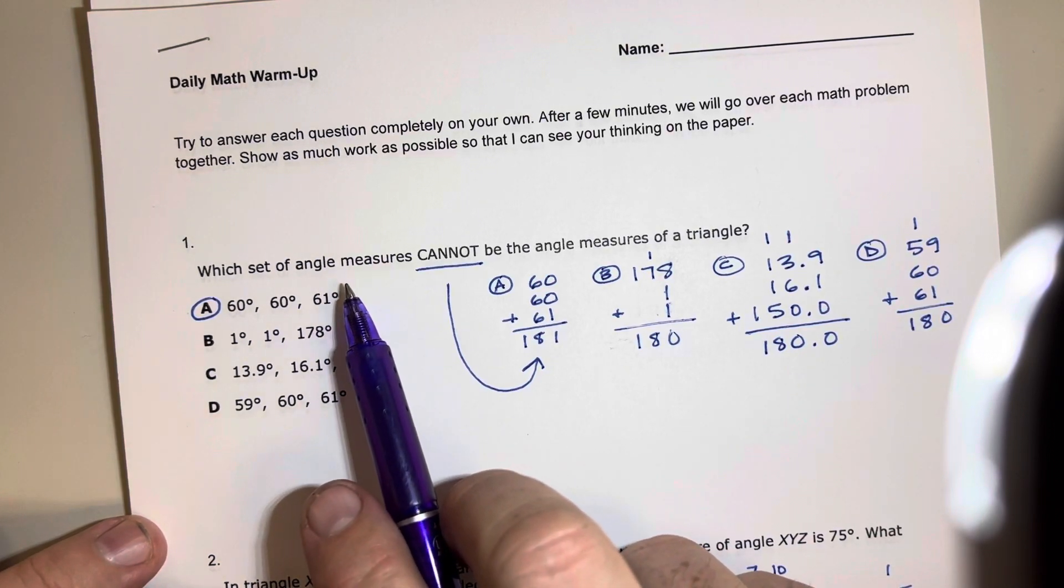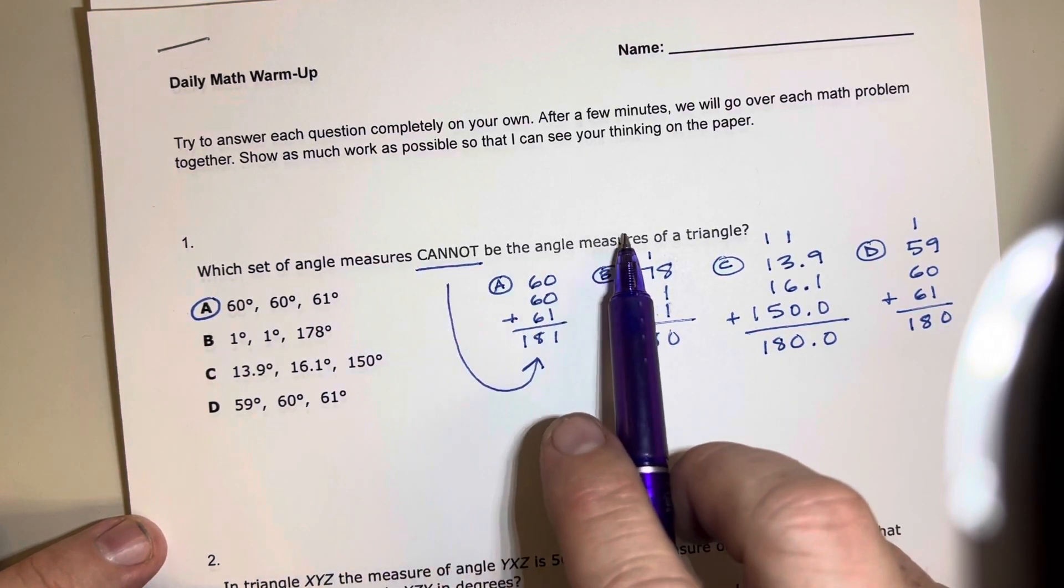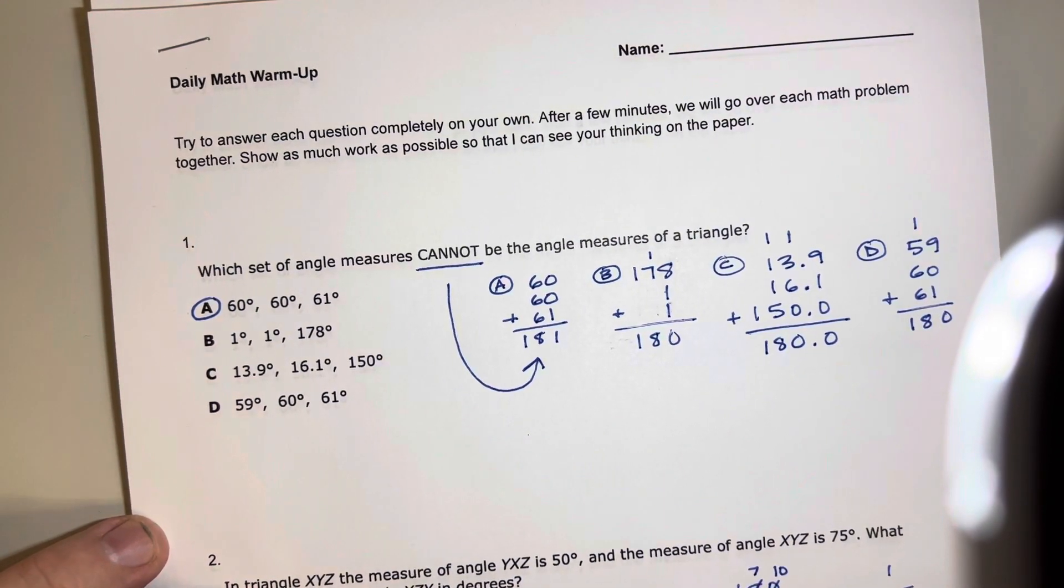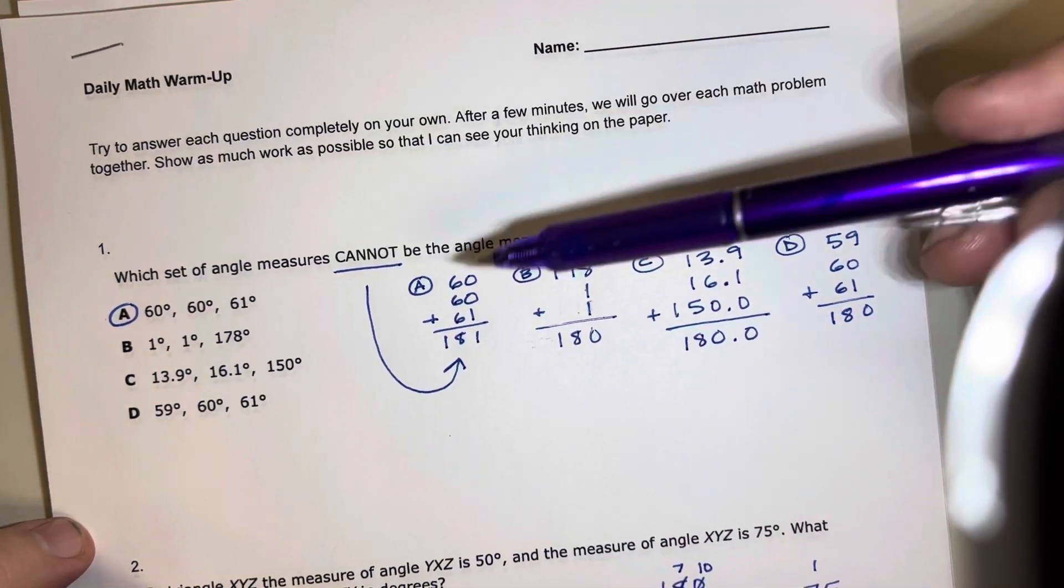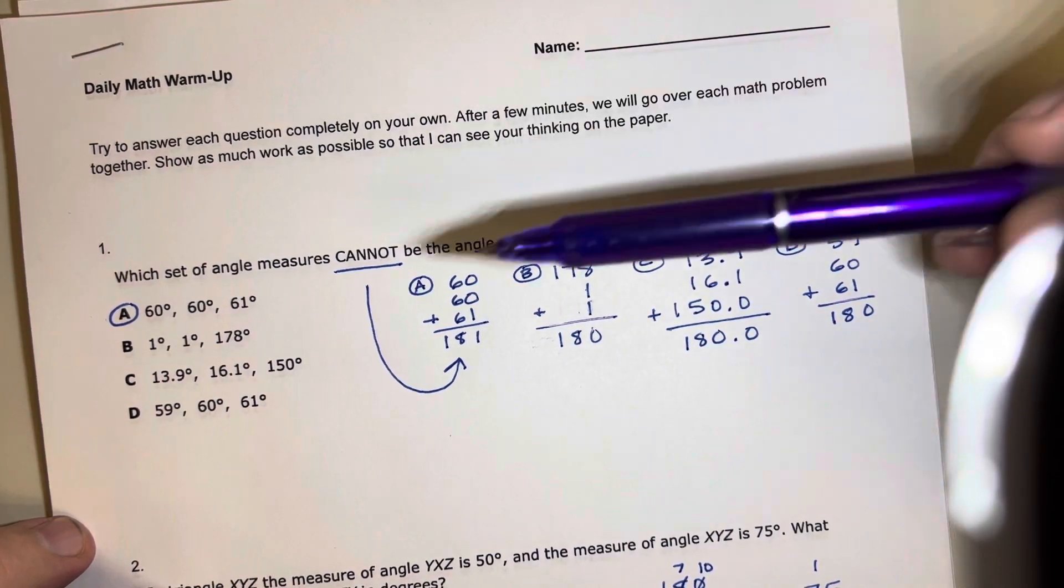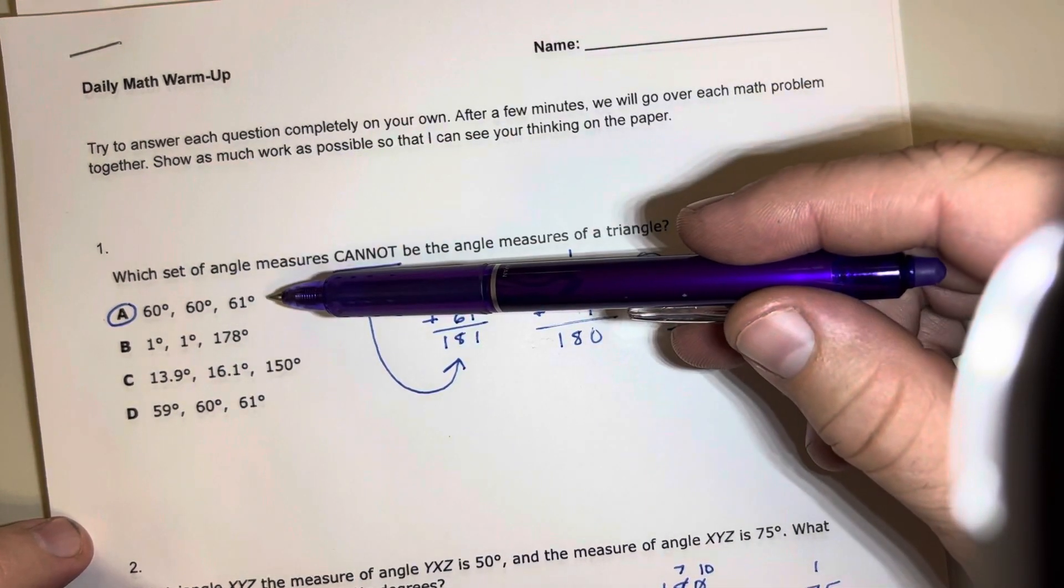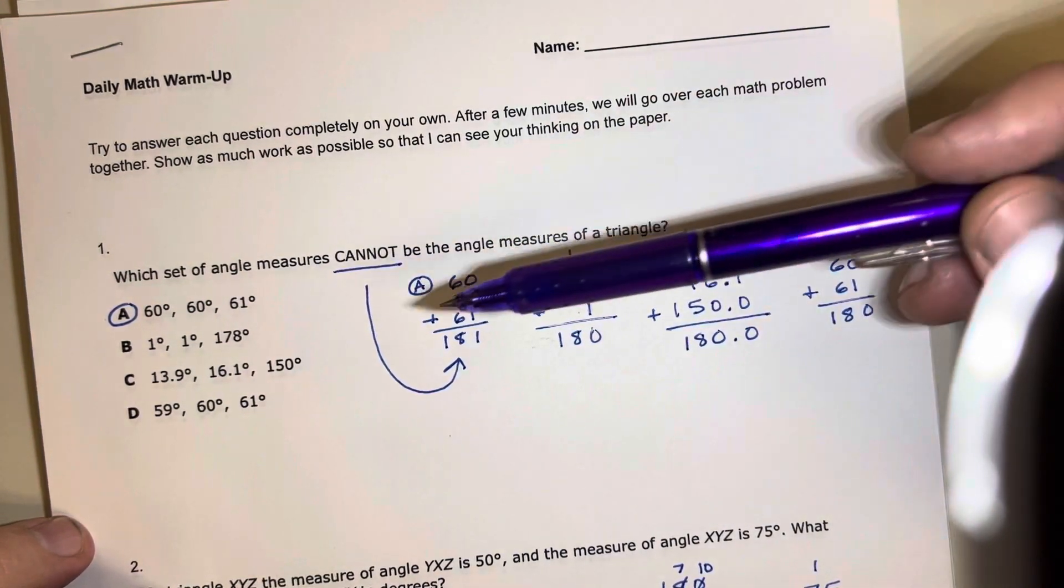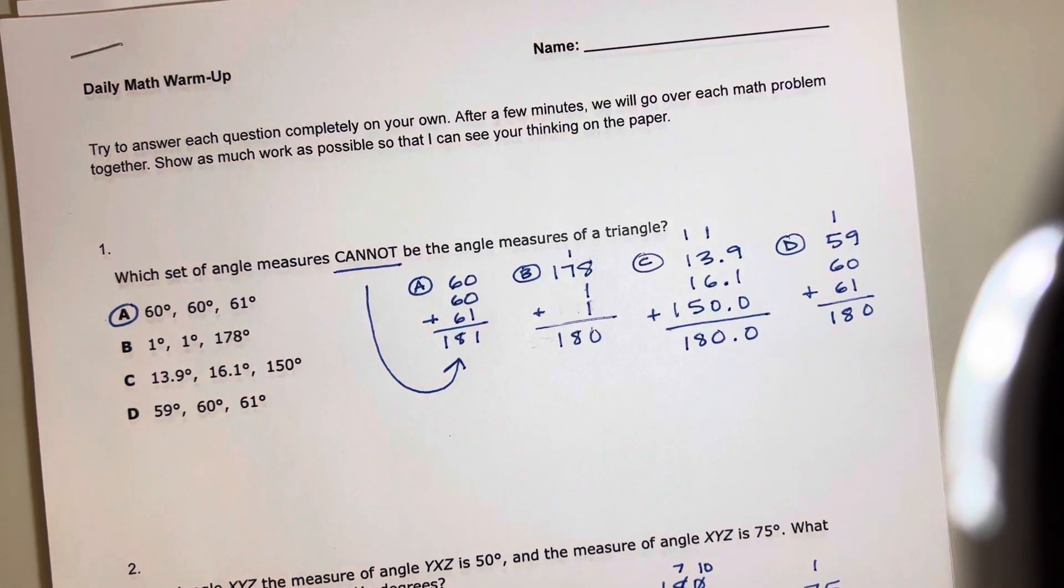In question one it said which angle measures cannot make a triangle. So if you take answer choices A, B, C, and D and you add them all up, one of them does not equal 180 and the other three do. So you cannot make a triangle with three angles that measure 60, 60, and 61 because you'd be over 180 degrees if you did that.